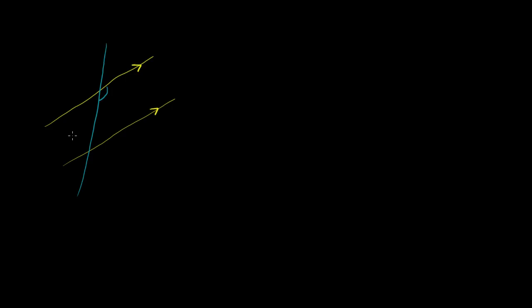I were to tell you that this angle right there is 60 degrees, and then I were to ask you what is this angle right over there? You might immediately say, oh, that's very difficult — that's on a different line. But you just have to remember that corresponding angles are always equivalent. If you look at this angle up here on the top line where the transversal intersects it, what is the corresponding angle where the transversal intersects the bottom line?